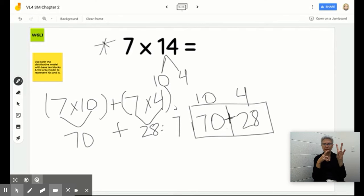So 70 plus 28. I'm not sure if you guys ever do this, but what I'm looking at is my ones right now and I see actually 8 ones and I see 7 tens and 2 tens. I know that 7 tens plus 2 tens is 9 tens, and I place it in my tens column. So that tells me that 7 times 14 is 98.